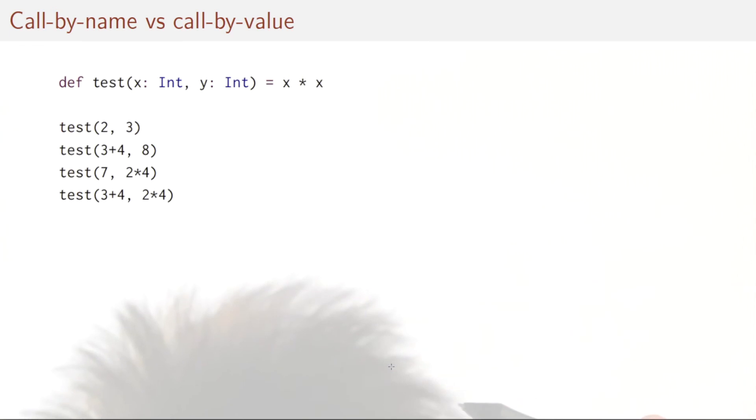Let's see how we would answer this question. I have the test function here and I have the calls that I want to compare. Let's start with the first one. Test two three. How would that evaluate? Well, test two three. We take the definition of test x times x. So that would give two times two. And that would reduce to four. And in fact, it would reduce to four under both evaluation strategies, both call by name and call by value, because we have started with already evaluated arguments. So there is no choice in the matter. So here the answer would be they have the same complexity.